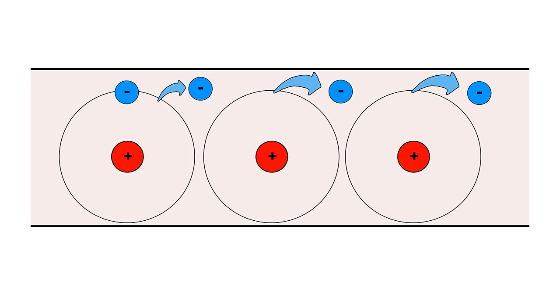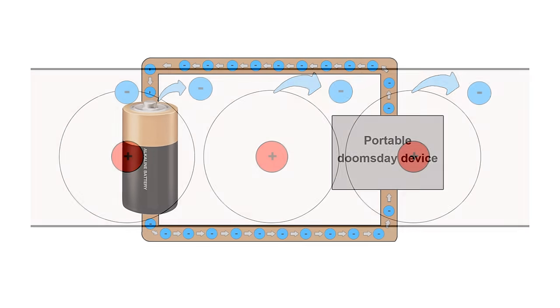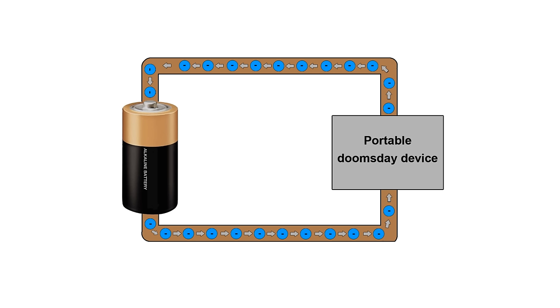Even though each electron is only jumping a tiny tiny distance, this overall flow happens close to the speed of light. And that's basically what the flow of electricity is. When electrons are flowing through something, you can say that electric current is flowing.